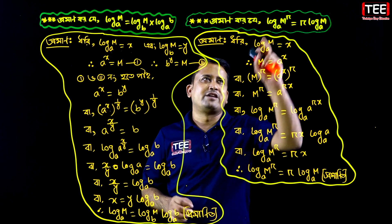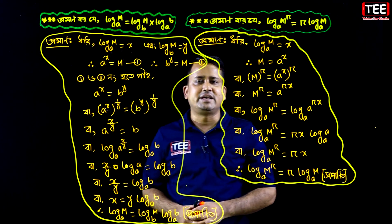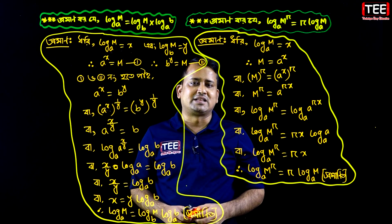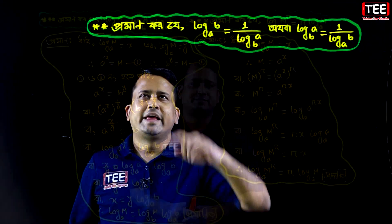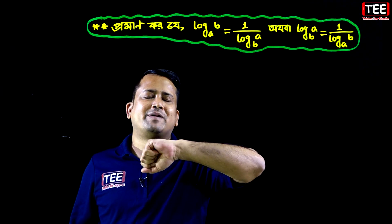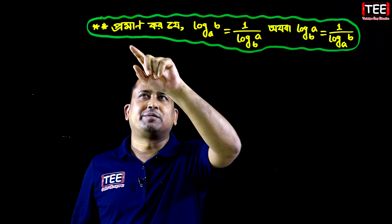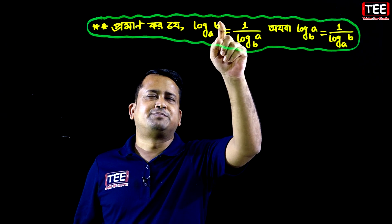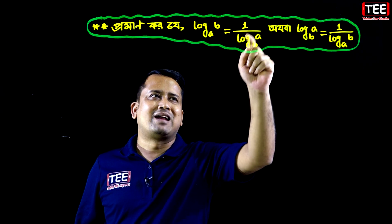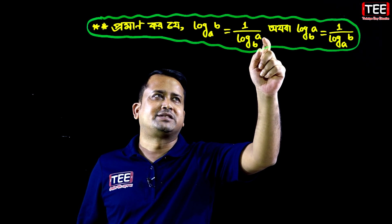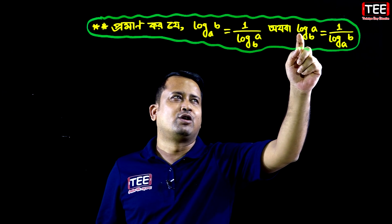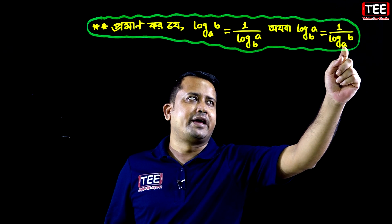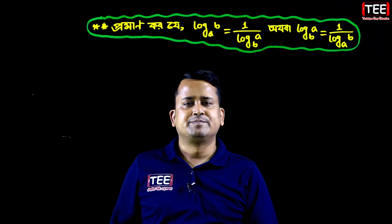Now for Proof 3: log base b of a is equal to 1 divided by log base a of b. This is the reciprocal rule for logarithms.